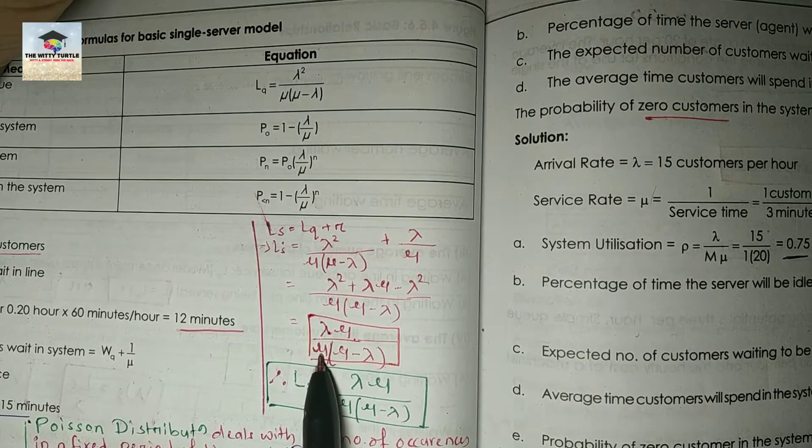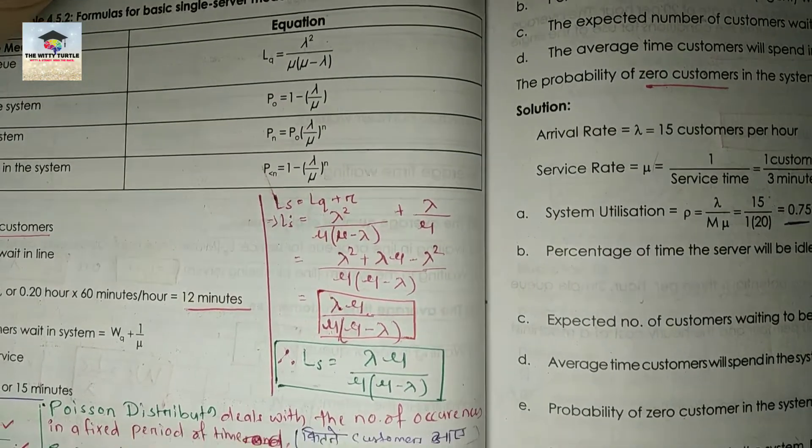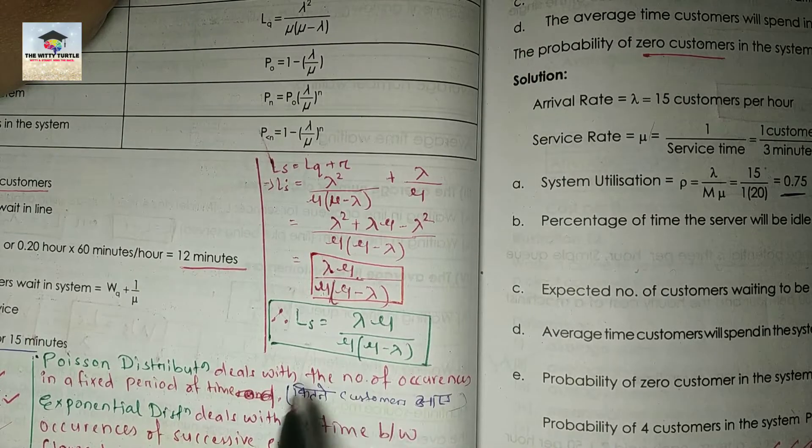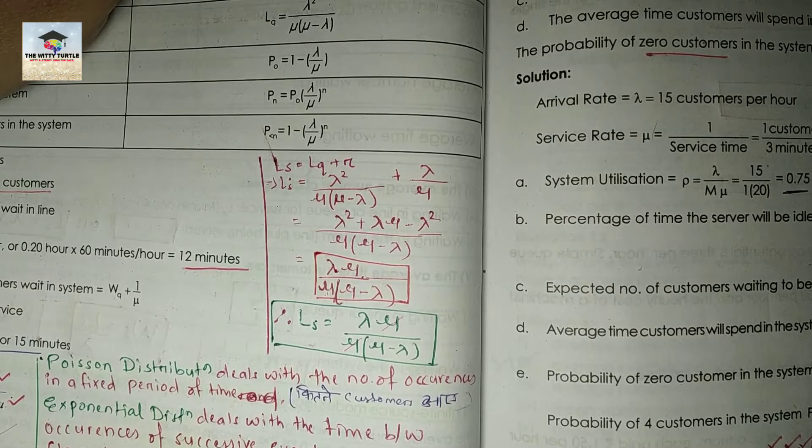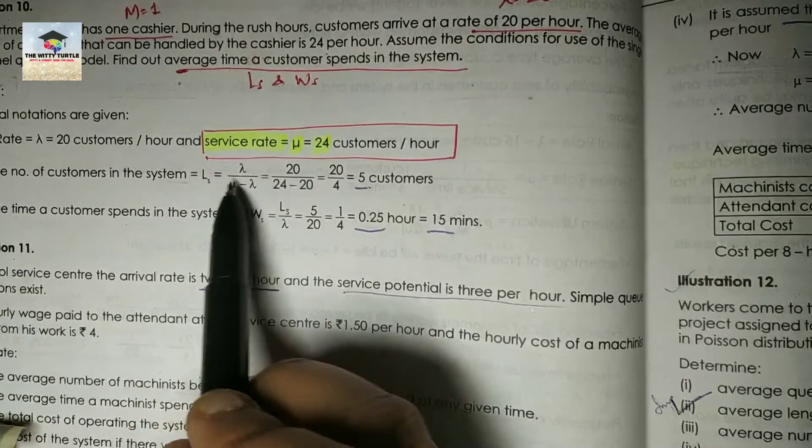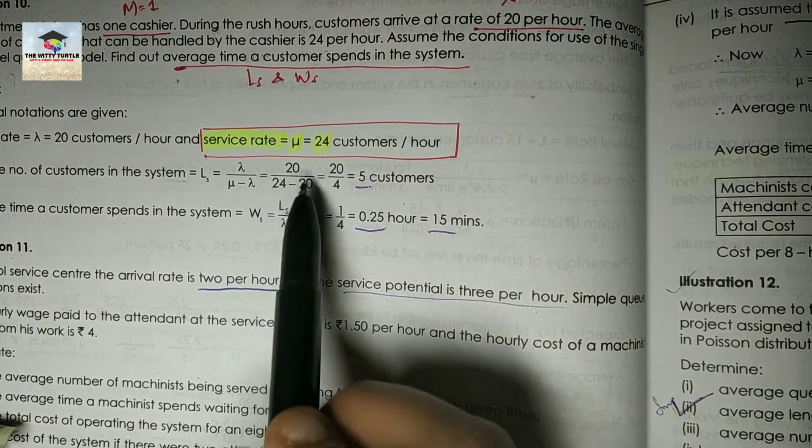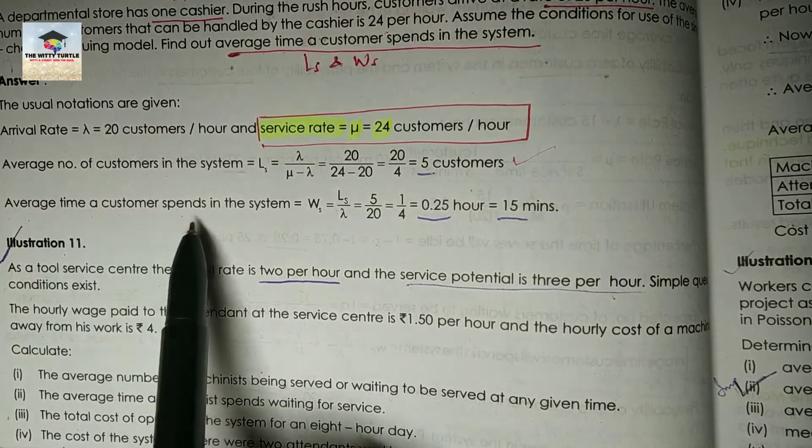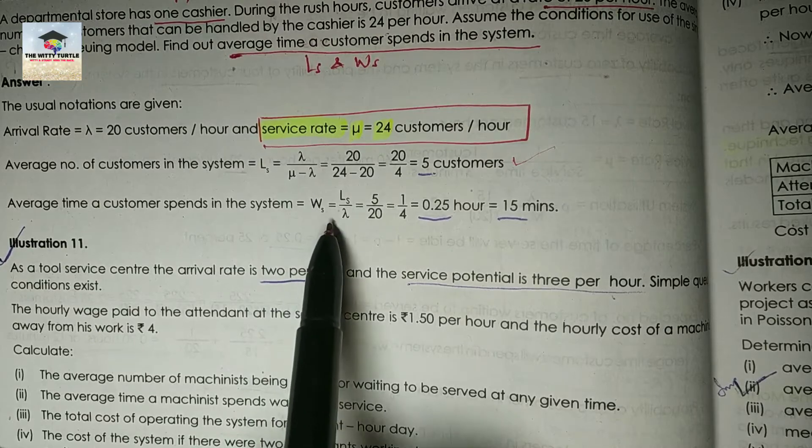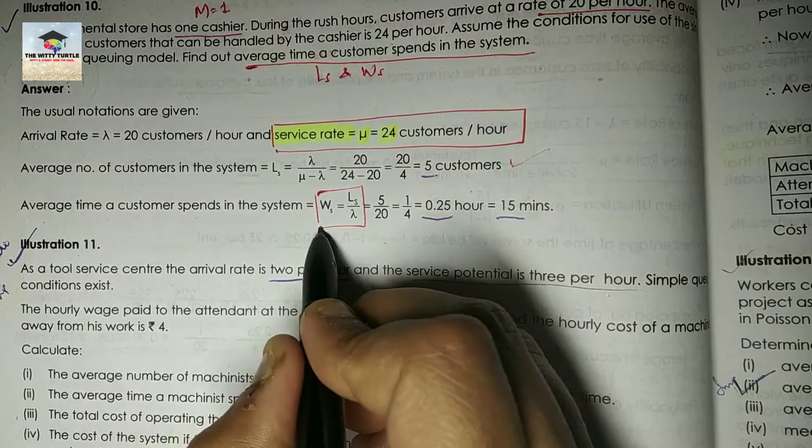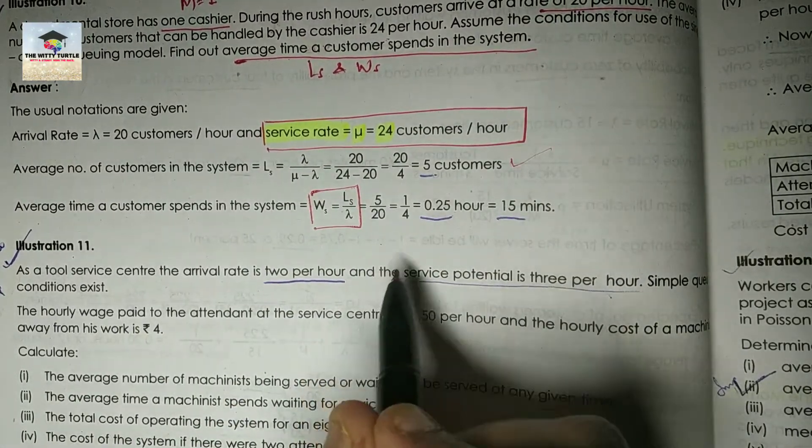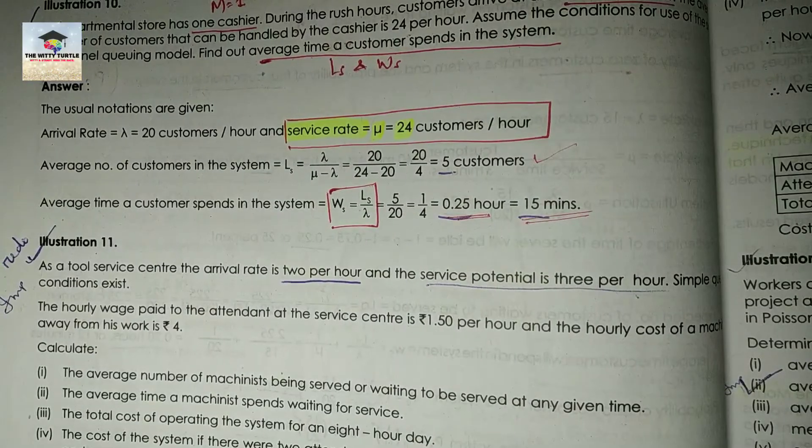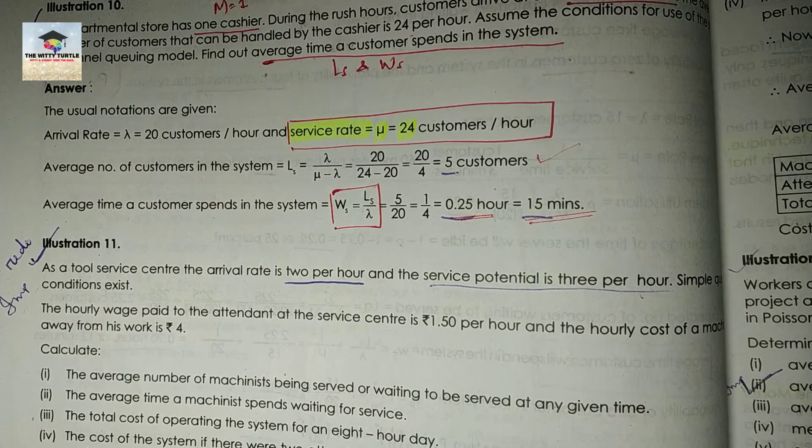So the final formula will be Ls equals to lambda divided by mu minus lambda. Simply put the values and you will get the answer as 5 customers. Now the next question is average time a customer spends in the system equals to Ws equals to Ls by lambda. This is the standard formula that we have been using since the first question. So this will be what? 5 by 20, that is your 0.25 hours or simply 15 minutes. I hope these two questions are clear for you. In the next class we will solve illustration number 11 and also illustration number 12.